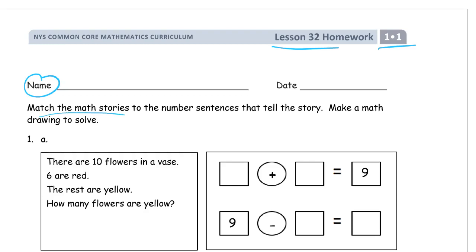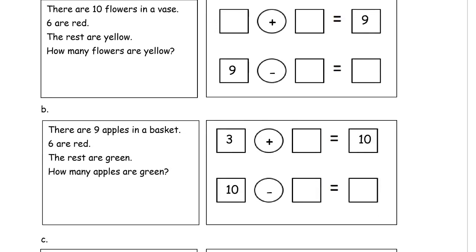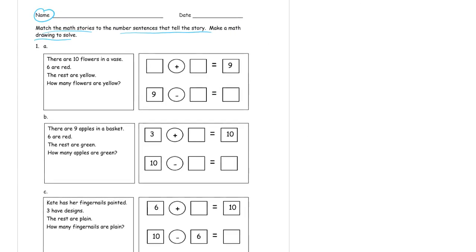We're matching the math stories to the number sentences that tell the story, and making a math drawing to solve. On the whole page, we have three stories: story A, story B, and story C. Then we have number sentence, number sentence, number sentence. This won't necessarily be A matching the first, or B the second, or C the third — we'll figure out which story goes with which number sentence. We also have to make a math drawing in the boxes for A, B, and C. We'll do that first, and then we'll find out which boxes match after we finish making our math drawings.